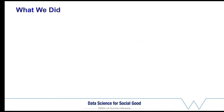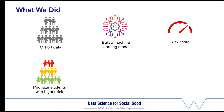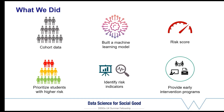So what did we do? We took the council's data and applied machine learning to develop a risk score. Using this risk score, the council can prioritize students for support who have higher risk. In addition, our trained models can identify different factors affecting a particular student's risk. Using this information, councils and schools can provide more personalized intervention for their students, depending on what factors are strongly increasing their risk.